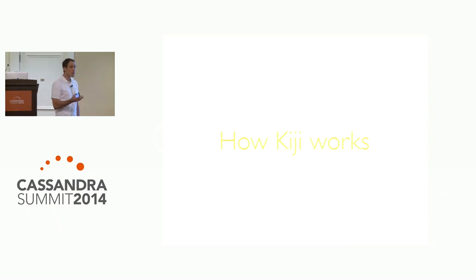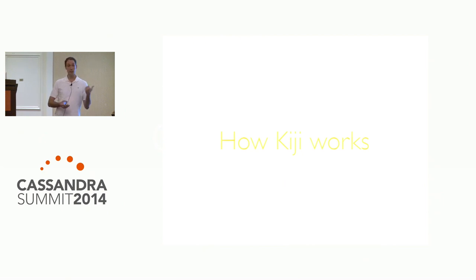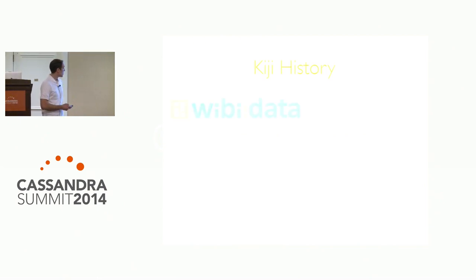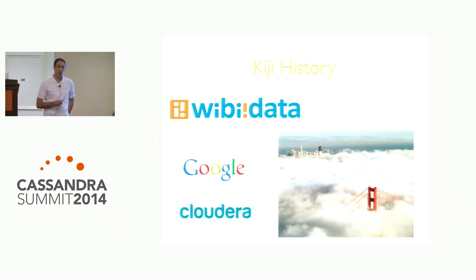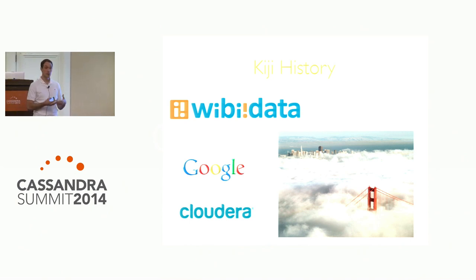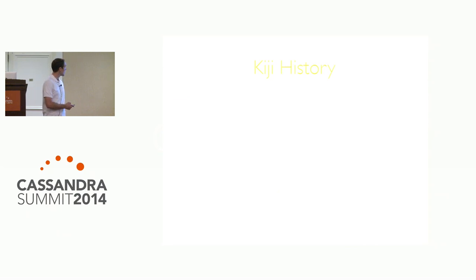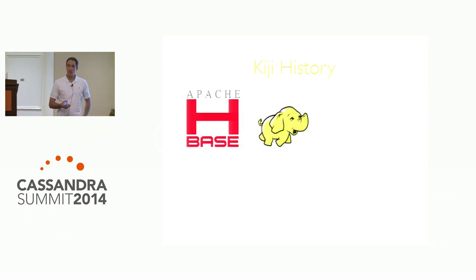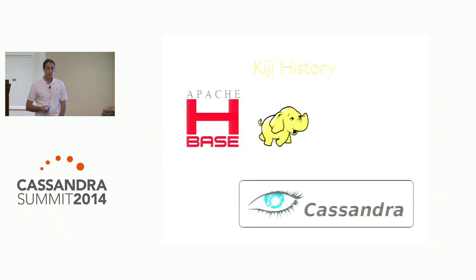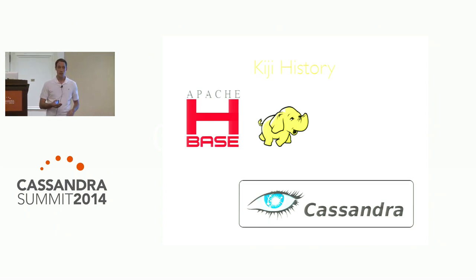I'll now describe Kiji's architecture and how you can use it to build these applications. A bit of history: we developed Kiji at WibiData, a San Francisco startup founded by people from Google and Cloudera with experience building personalized big data applications on Hadoop. We originally built Kiji on top of HBase and Hadoop a few years ago, but due to strong demand from the community and enterprise customers for Cassandra, we modified Kiji this year to run on top of Cassandra as well as HBase.